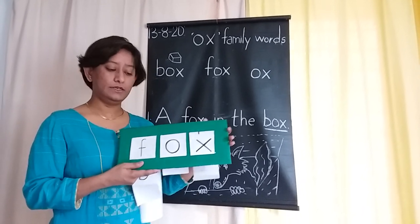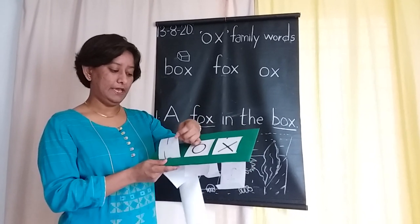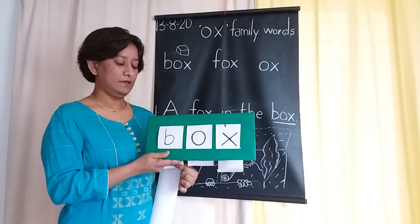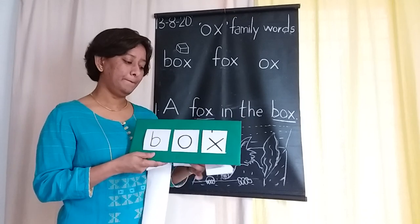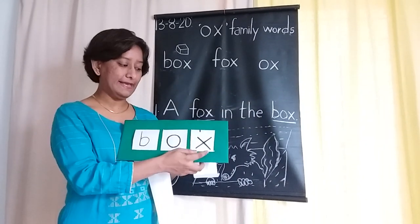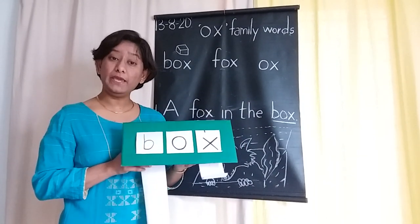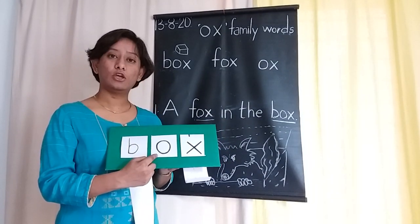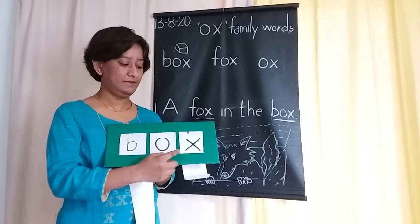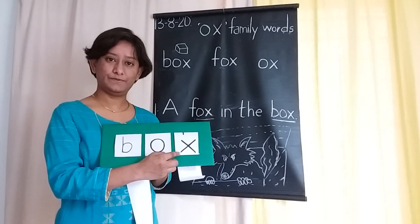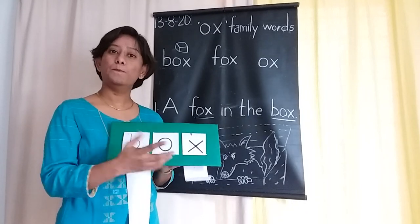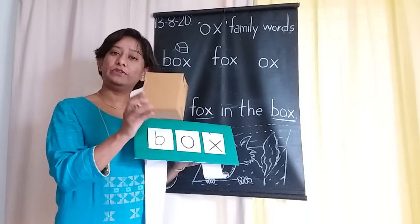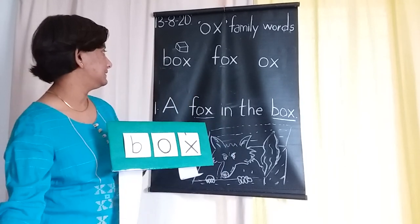This time we are going to add a new letter and make a new word. I have added B to OX. What will it be? B says B, O says O, X says S. Box. Box is a small carton where you can put things inside it. That's the second word.